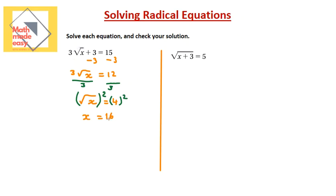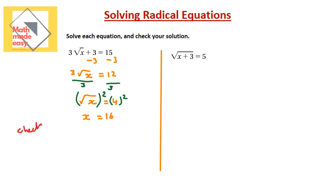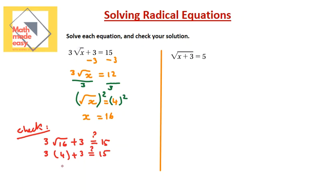When you solve radical equations, always check your solution. Substituting x = 16: 3 times square root of 16, plus 3. The square root of 16 is 4, so 3 times 4 is 12, and 12 plus 3 is 15 — 15 equals 15, check. When finding the square root while solving an equation, we always work with the principal root only, which is the positive one. So square root of 16 is 4, not negative 4.